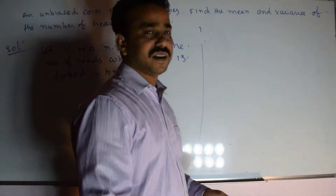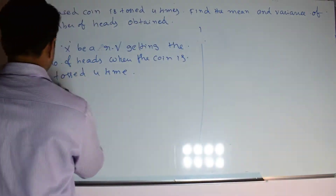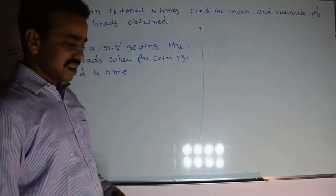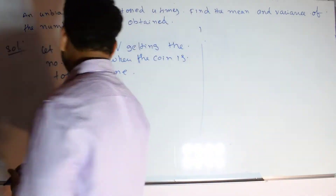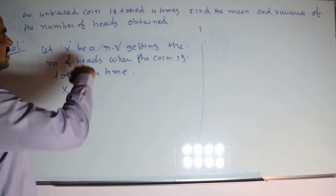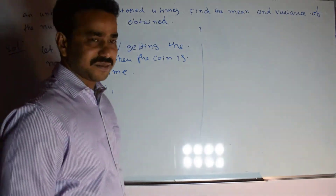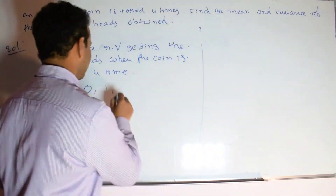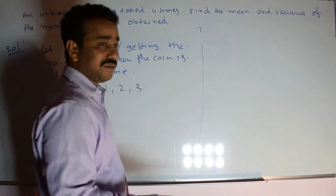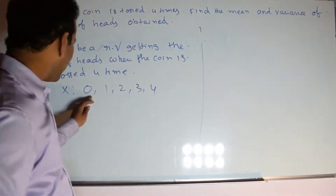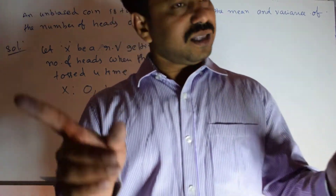Now what are the possible values x can take? If we toss a coin 4 times and get tails all times, then the random variable x equals 0. If we get only one head and 3 tails, then x takes 1. If we get 2 heads and 2 tails, then x takes 2. If we get 3 heads and 1 tail, then x takes 3. If we get all heads, then x takes the value 4. So we conclude that random variable x takes the values 0, 1, 2, 3, and 4.